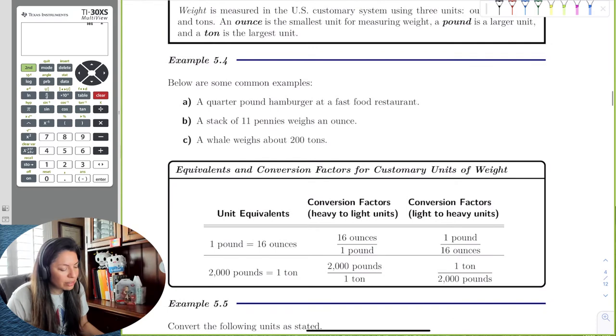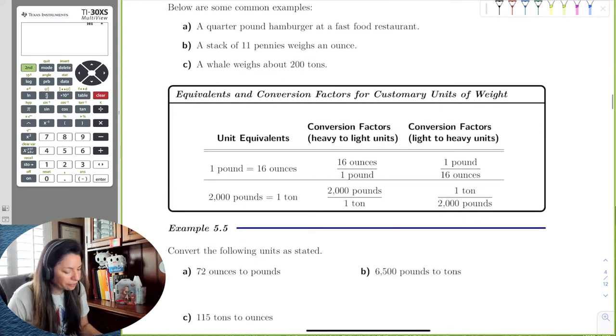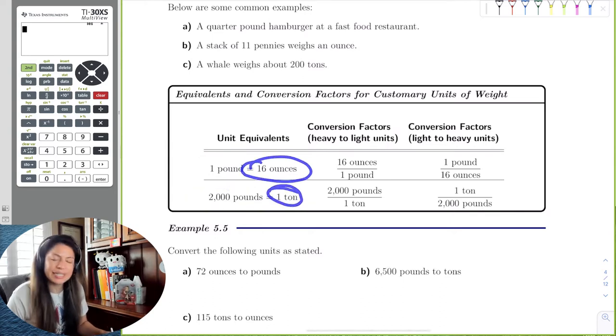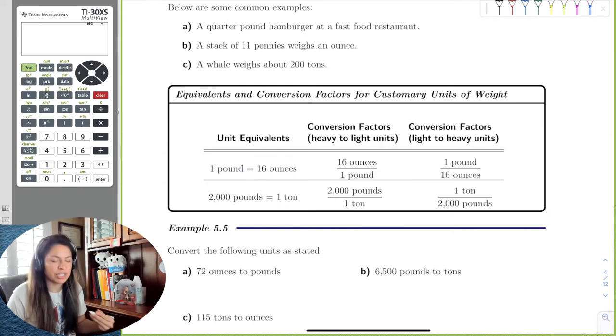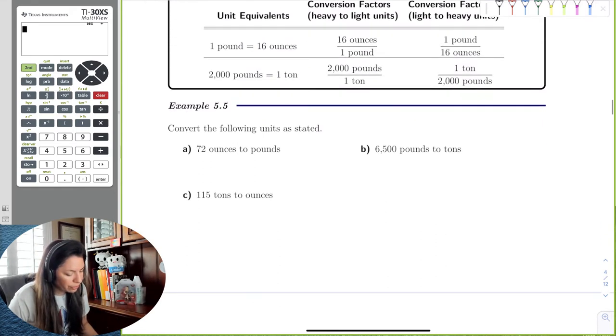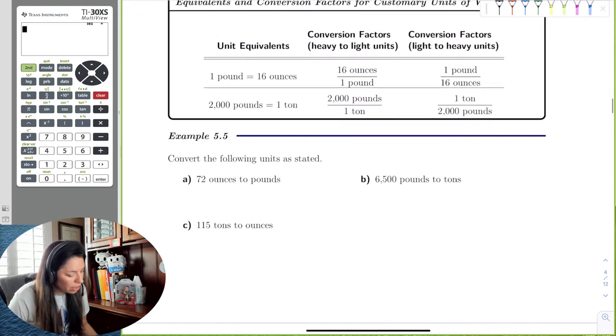So let's look at some unit equivalents for weight. We know that one pound is 16 ounces, and 2,000 pounds is one ton. And we certainly could find the number of ounces in one ton by doing some conversions. So let's look at a few examples. If I wanted to rewrite 72 ounces to pounds, let's follow the same process.